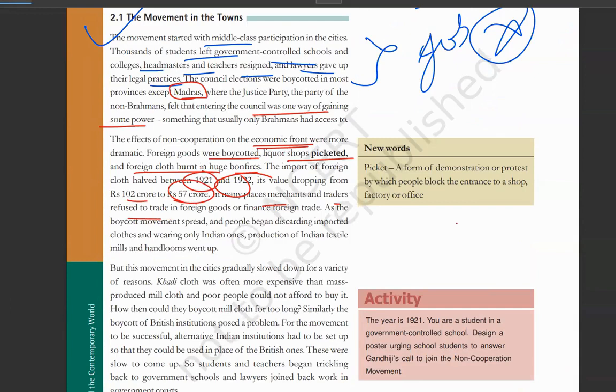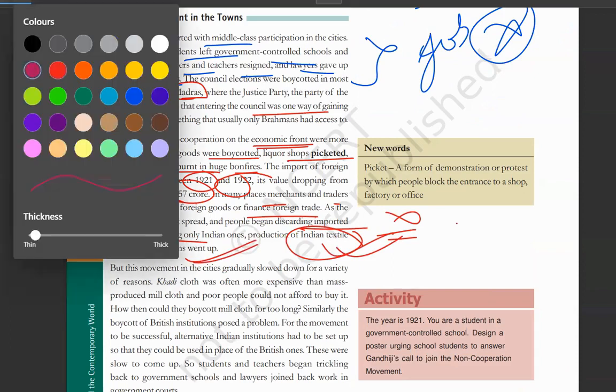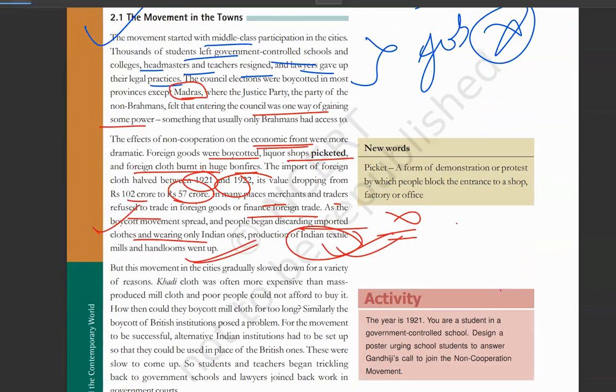Merchants and traders تھے ان سب نے کیا کر دیا - foreign trade انہوں نے refuse کر دیا کہ ہم اس میں invest نہیں کریں گے. جیسے ہی movement میں سب کچھ boycott ہونے لگا, لوگ imported cloth سے away ہو گئے aur Indian textiles, handlooms کو use کرنا start کر دیا. Indian market تھا وہ ایک دم boom up ہو گیا - بہت زیادہ بڑھ گیا.